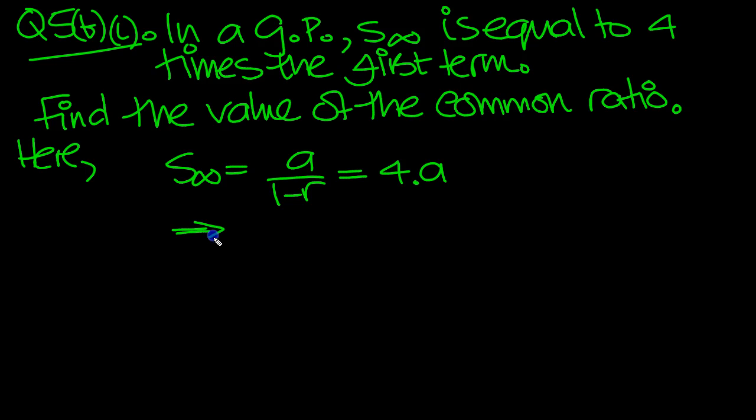Cancel the A's on both sides: 1 over 1 minus R equals 4.